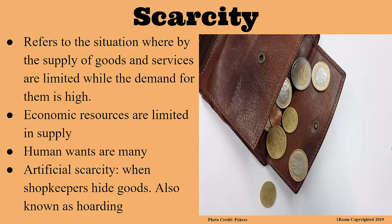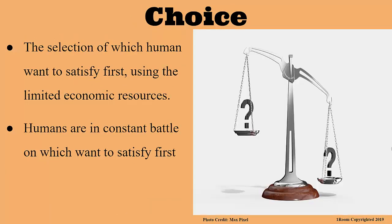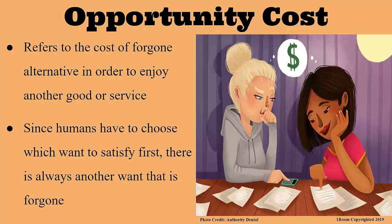Since economic resources are scarce and human wants are unlimited, one has to constantly choose which need to satisfy first. When the professor was young, they wanted a bicycle, but their father's money could only buy clothes, food, and school fees. The father had to make a choice between the bicycle — a secondary need — and basic necessities like clothes and food. When making choices, one has to forgo something. The father had to forgo the bicycle. When an item is forgone so that another is enjoyed, the cost of the forgone item is referred to as opportunity cost. So the cost of the bicycle forgone to buy clothes and food is the opportunity cost.